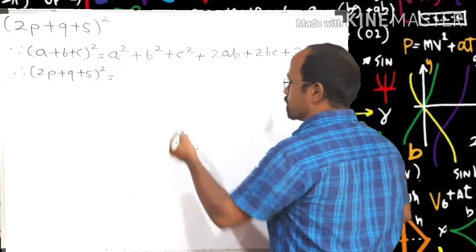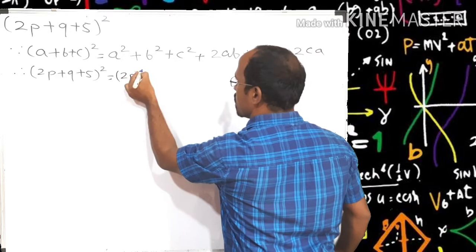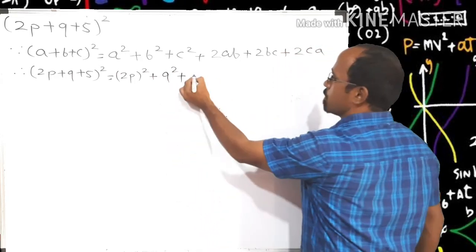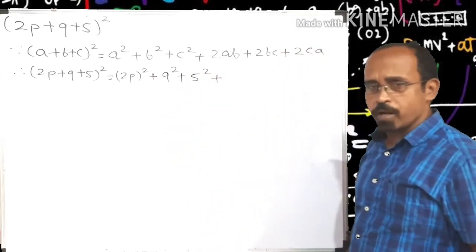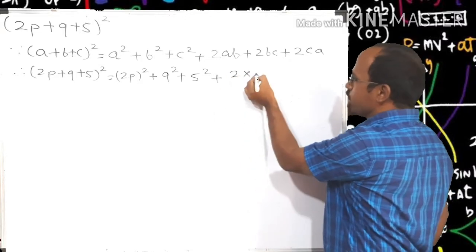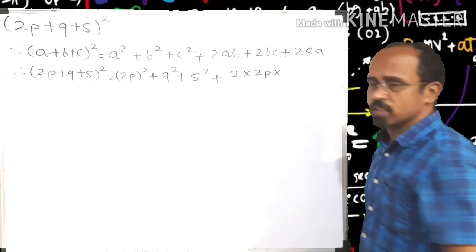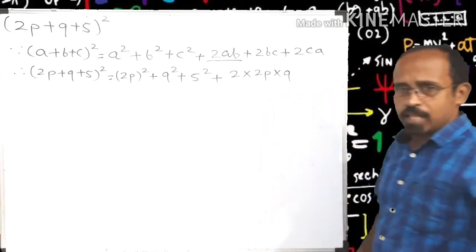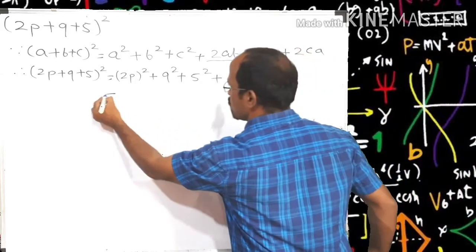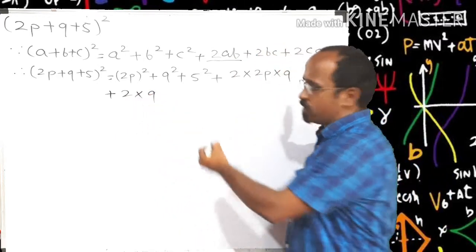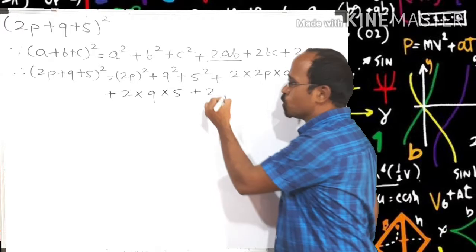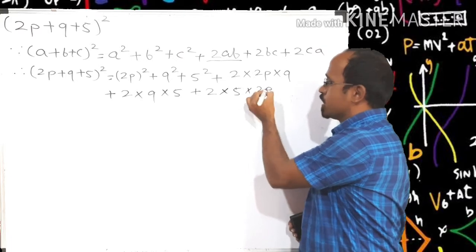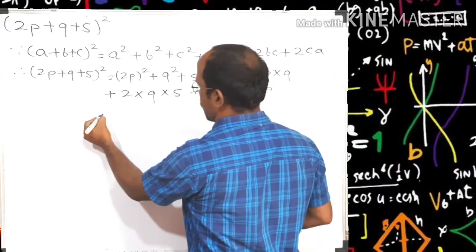So let's replace. a² will be replaced by (2p)² plus b², let's replace by q², plus c², replace it by 5², plus 2 into a into b, 2 into a which is nothing but 2p into b which is nothing but q. So we have written 2ab, let's write the remaining two terms, plus 2 into b, b is nothing but q into c which equals 5, plus 2 into c, c is nothing but 5 and a is nothing but 2p, clear friends.